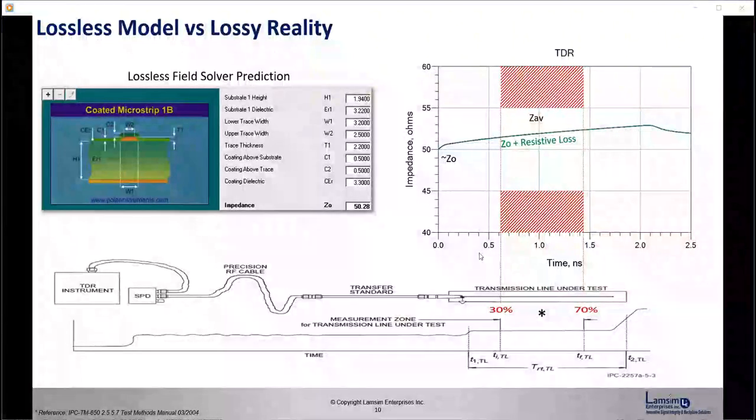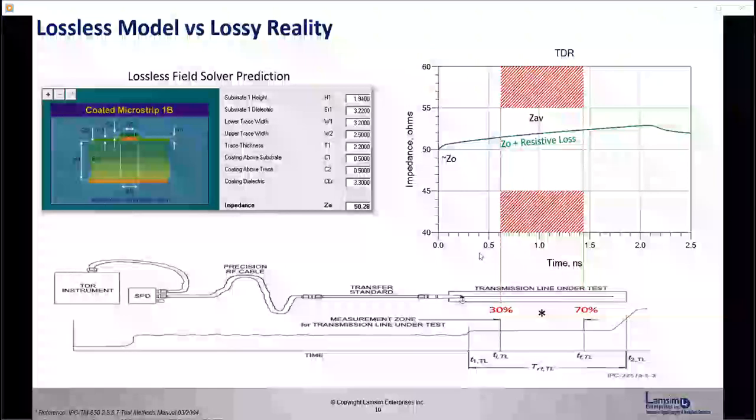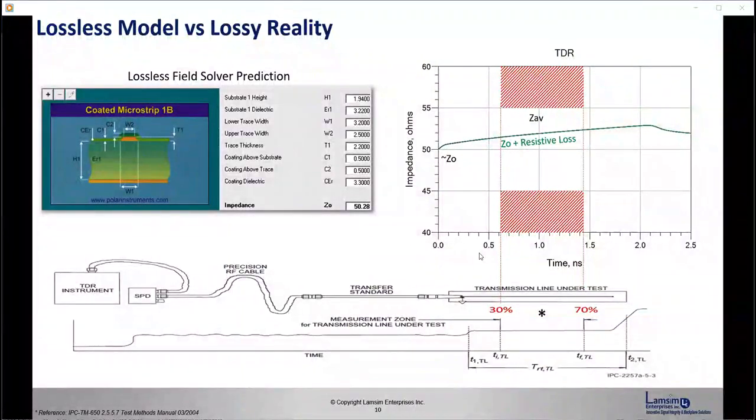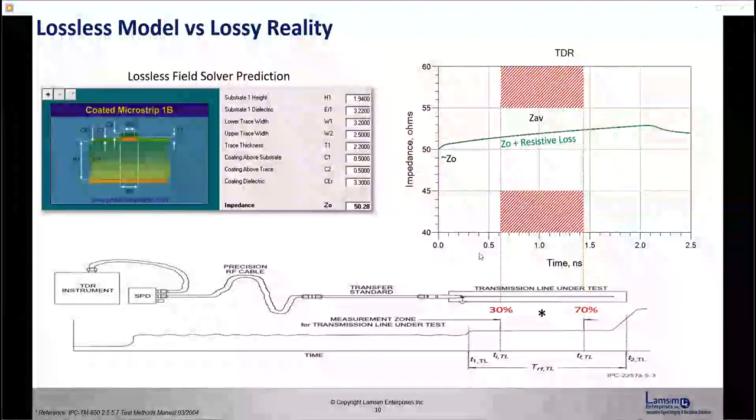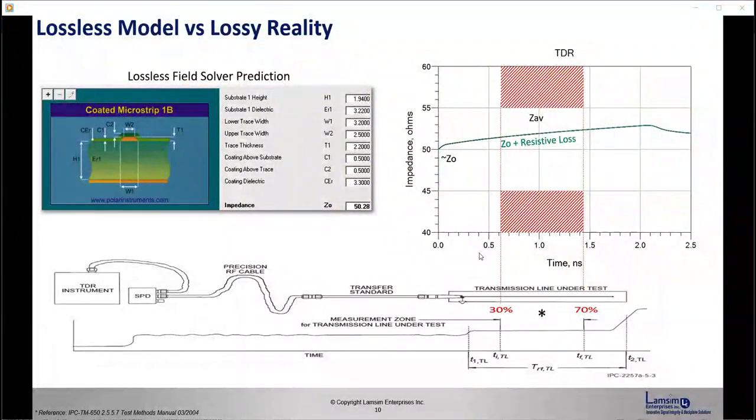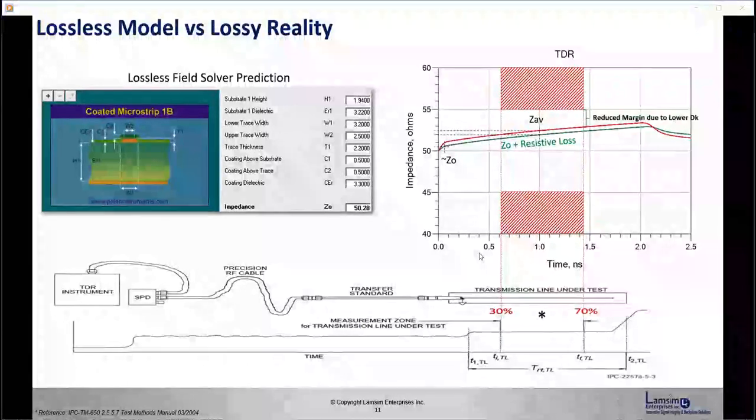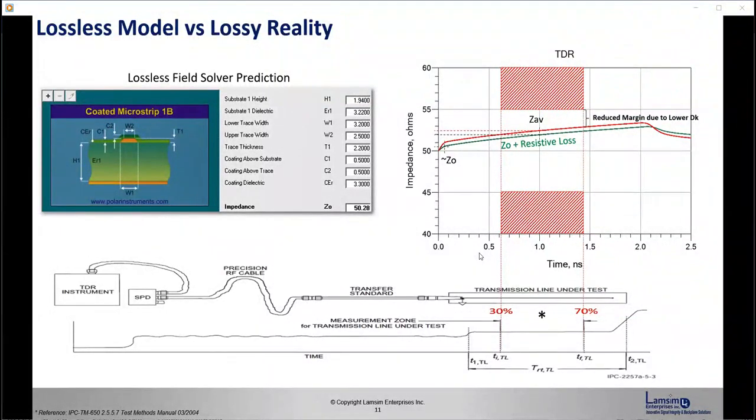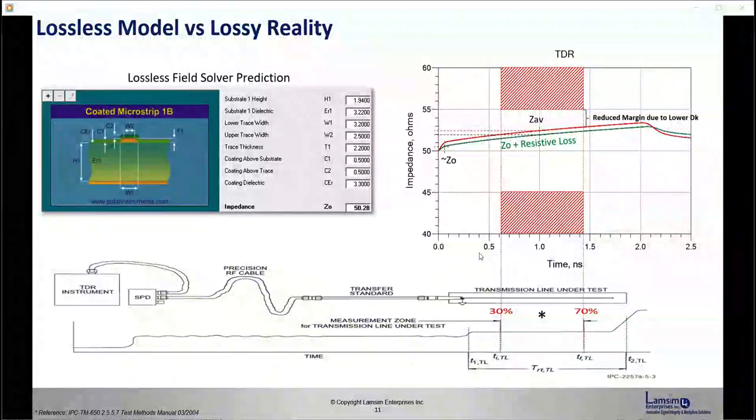And the actual impedance is near the beginning of the TDR plot. And the effect of the IPC standard, we typically measure 30% to 70% along that TDR line. So if you have a steeper slope, you have more potential of failing. And if you use the wrong DK, it erodes that margin even further.